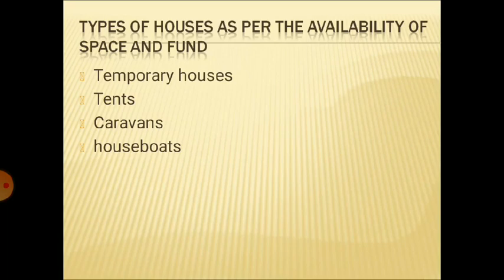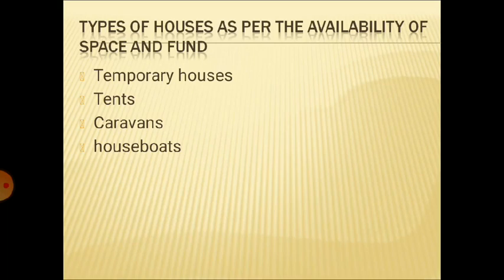Then comes tents. Tents are folding houses. When you go camping, you fix the tent; when you come back, you fold it and return. These houses are waterproof — if it is raining and you have fixed your tent, water will not come inside, and it will keep you safe from rain.